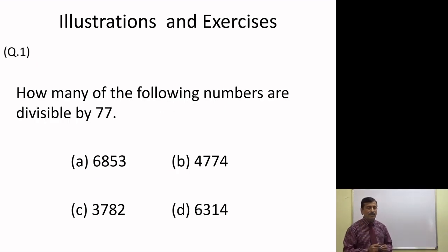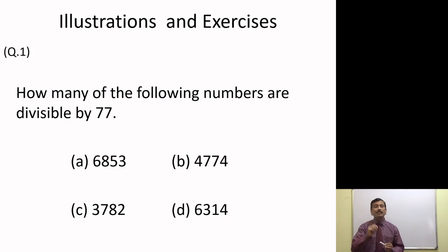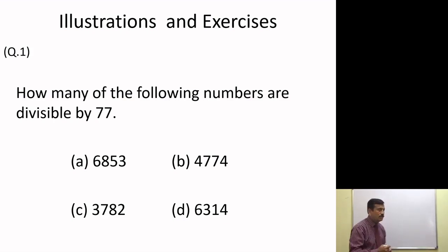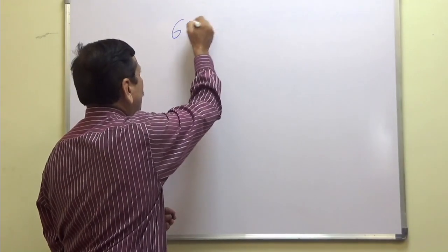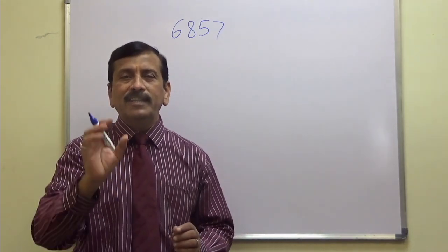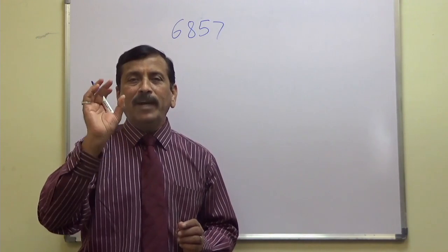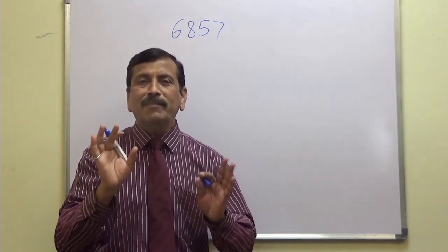Let us see an example. How many of the following numbers are divisible by 77? We are going to check all the numbers one by one whether they are divisible by 77 using the divisibility rule. We will find co-prime factors of 77.